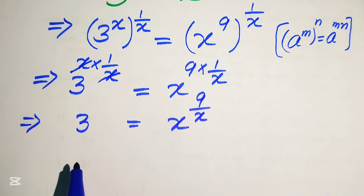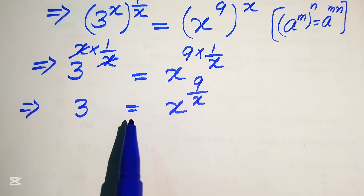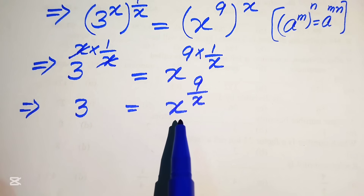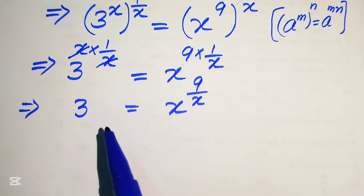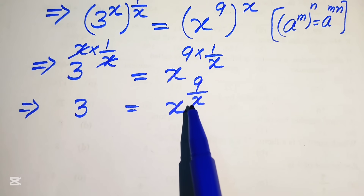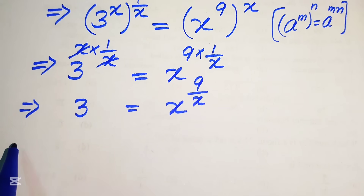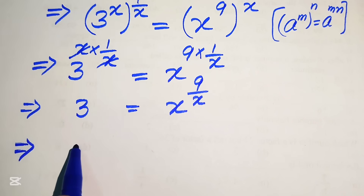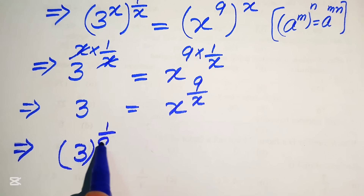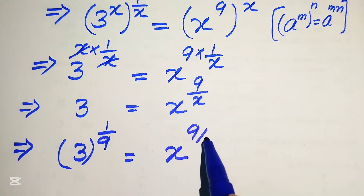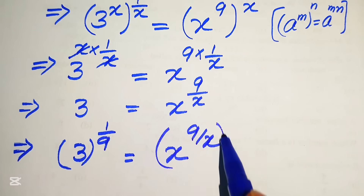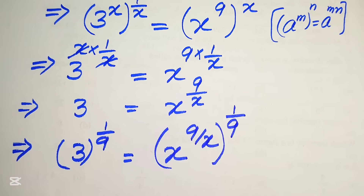Next, we move the 9 to the left hand side. To eliminate this 9 from the right hand side, we take the 9th root on both sides, which means applying the power of 1 over 9 on both sides. This is written as x to the power of 9 over x, to the power of 1 over 9.